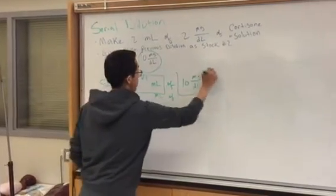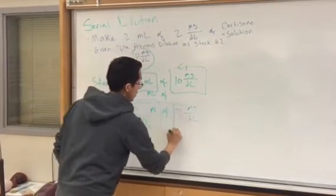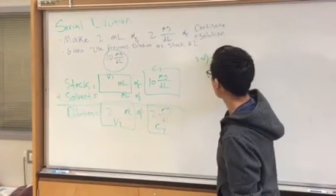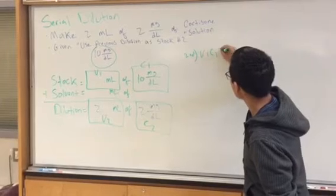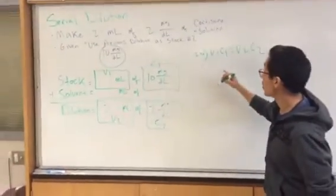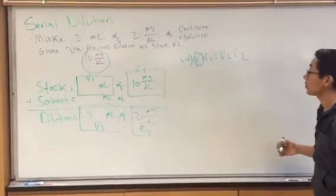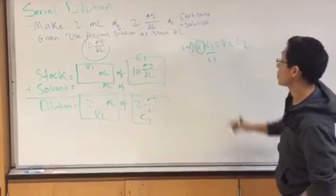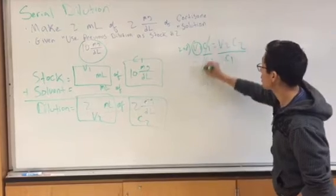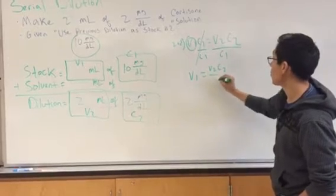And then, once we have that, what are we missing from here? We're missing our V1. So let's go ahead and circle that so we can know what we are canceling or what we need. So let's go ahead and do C1 to cancel the C1s. From the left side, you also have to do on the right side. The C1s cancel out. V1 equals V2 C2 over C1.